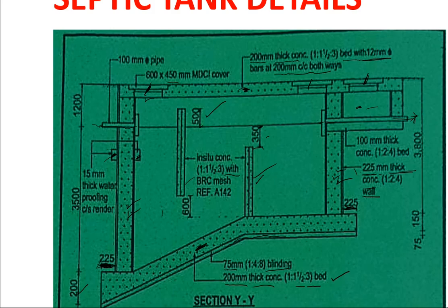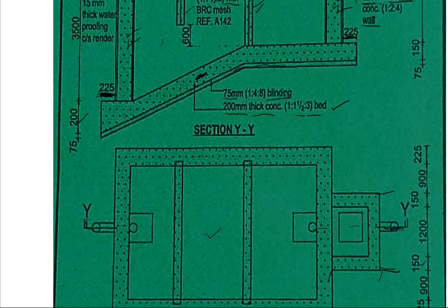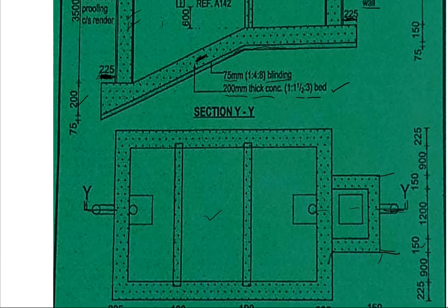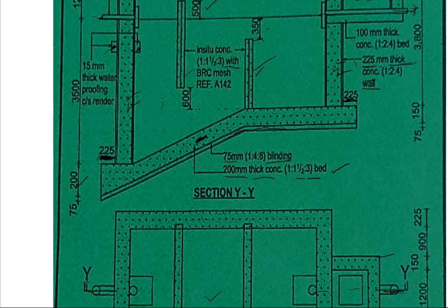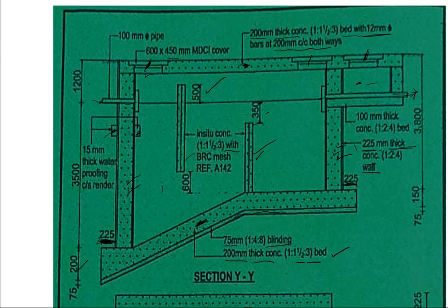From ground level up to where we have the inlet pipe is 1200 millimeters, and the depth below is 3500 millimeters. That is how our septic tank looks like for both the plan and the section, giving us all the fine details.